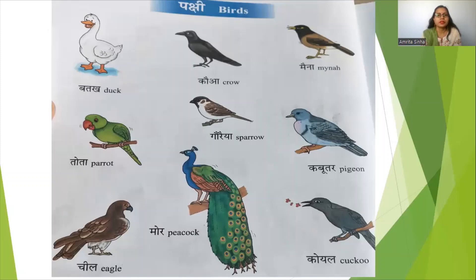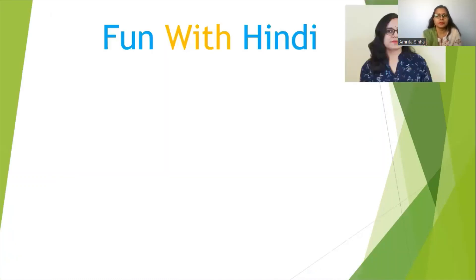Let us read all the bird names in Hindi once again: Pakshi. Batak — duck. Kaua — crow. Maina — Maina. Tota — parrot. Gauraya — sparrow. Kabutar — pigeon. Cheel — eagle. Moor — peacock. Koyal — cuckoo.